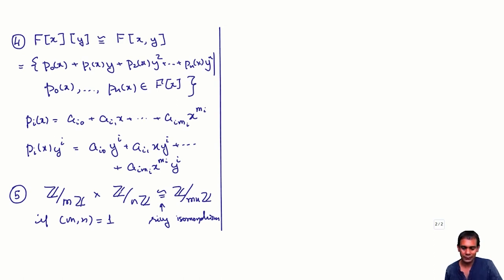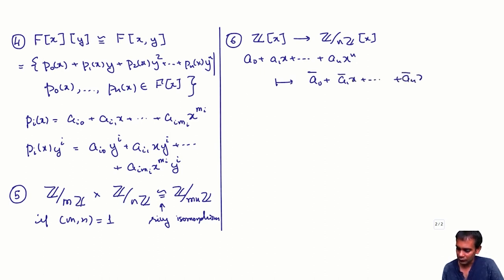Just go back and check how we constructed this isomorphism and verify that it preserves, in addition to the addition, also the multiplication and units. And the last example: just take Z[X] to Z mod NZ[X]. Polynomials with integer coefficients to polynomials whose coefficients are integers mod N. So you take a_0 plus a_1 X plus a_N X^N goes to a_0 bar plus a_1 bar X plus a_N bar X^N, where a_i bar is a_i plus NZ, the residue class of a_i mod N.